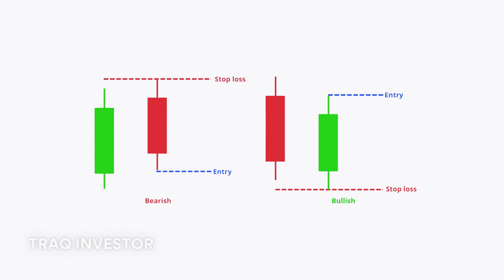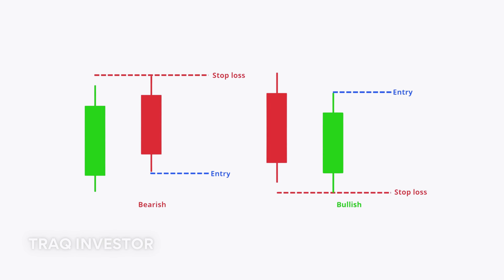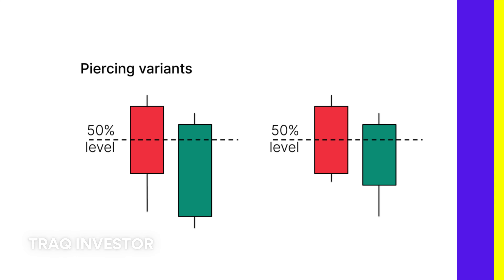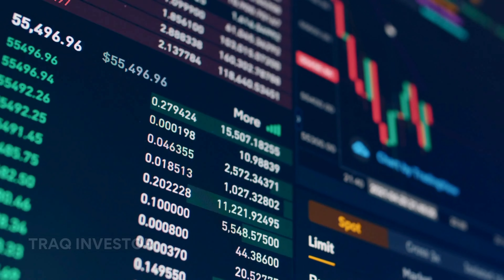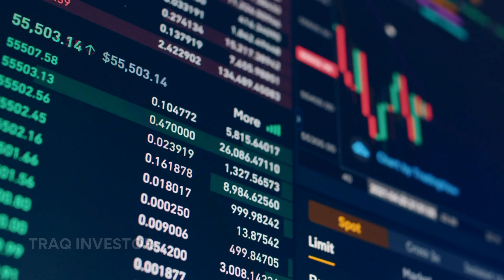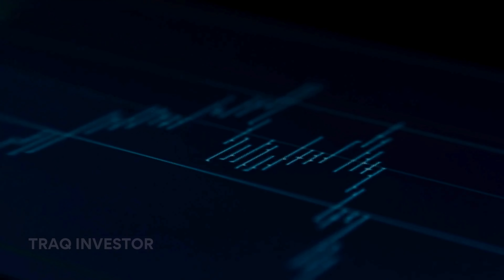The piercing line, another two-stick pattern, features a long red candle followed by a long green candle. A significant gap down usually exists between the closing price of the first candlestick and the opening of the green one, indicating strong buying pressure that pushes the price up to or above the mid-price of the previous day.